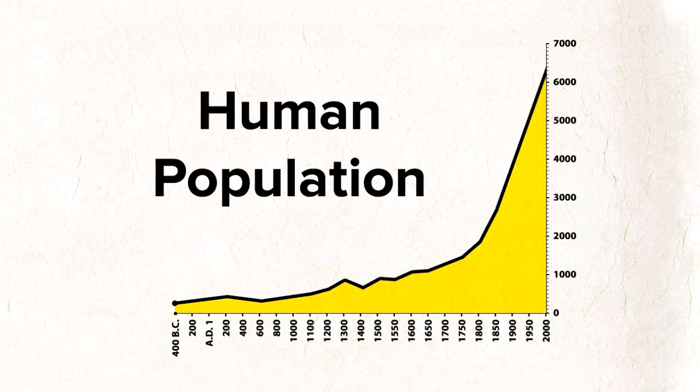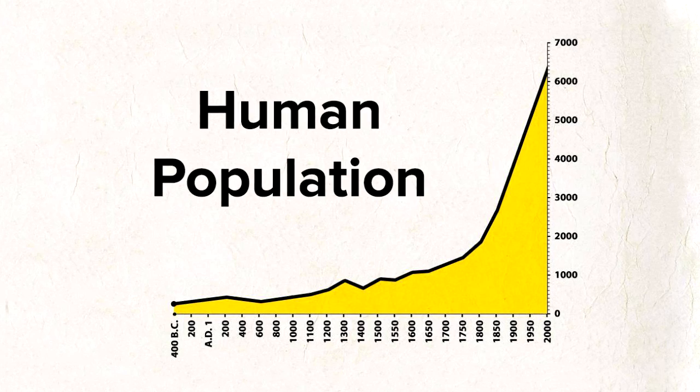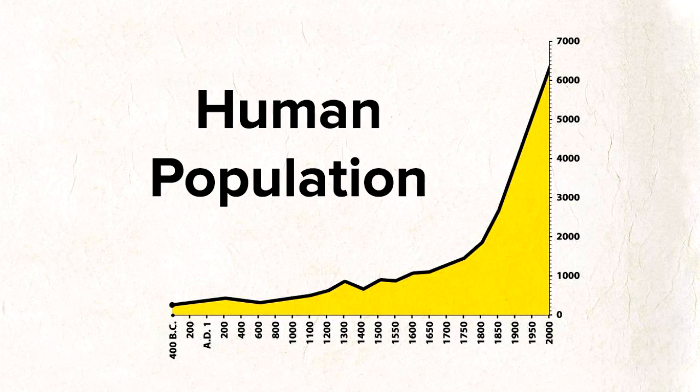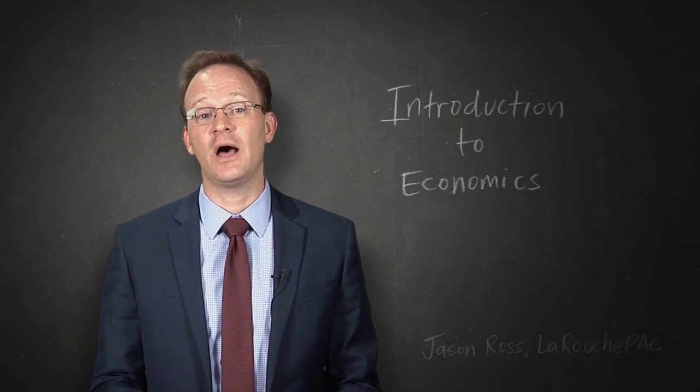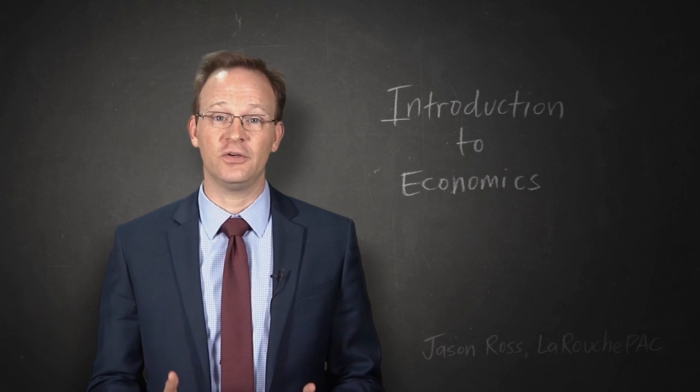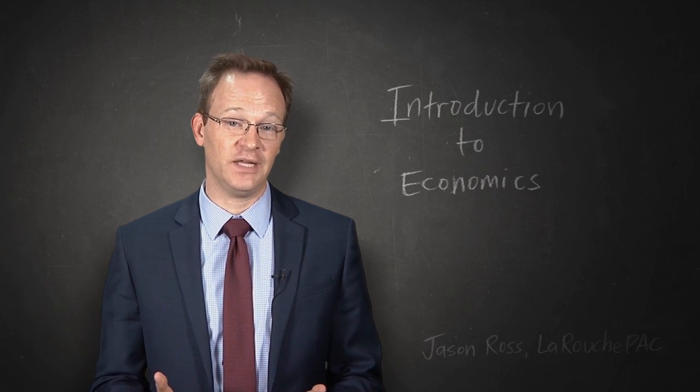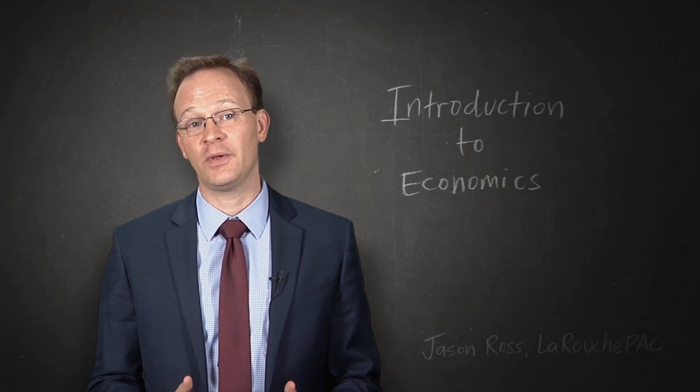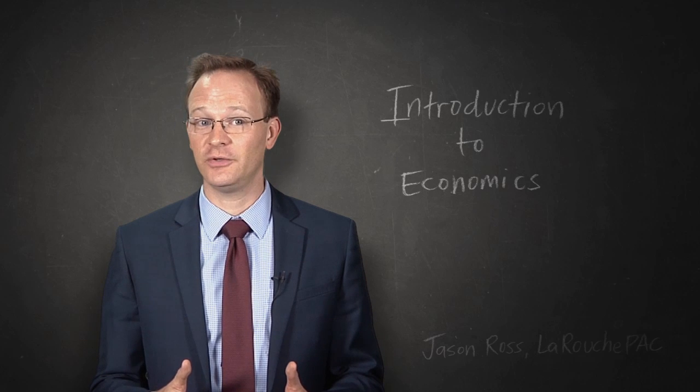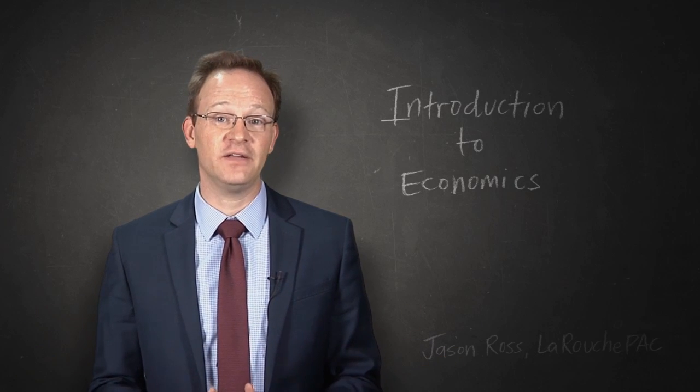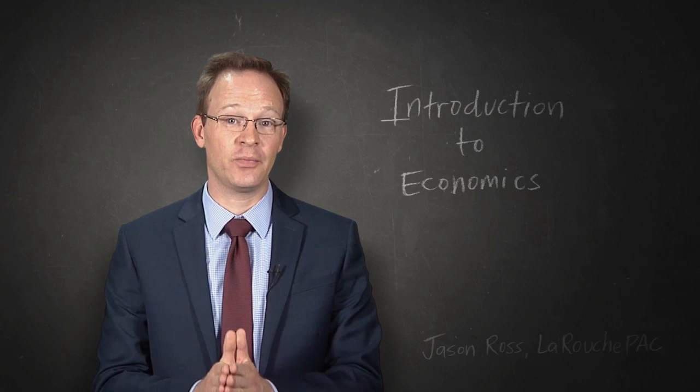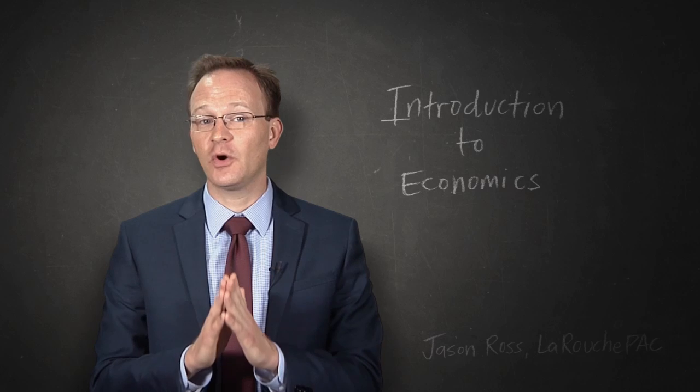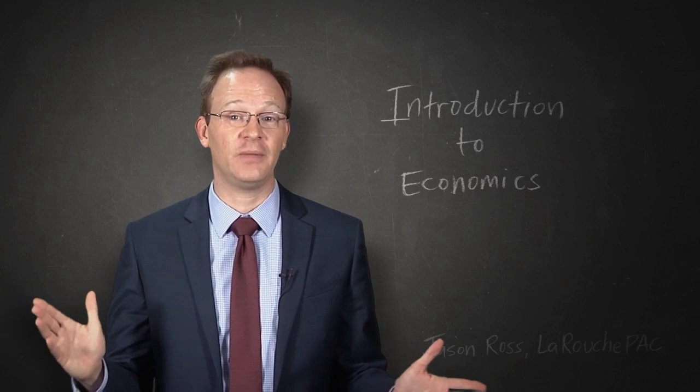Here we see human population, and there is absolutely no other living organism that has seen such a transformation in its population. All other life has what biologists call a carrying capacity, a fixed value of the number of that type of life that can live in a given area. Other forms of life consume resources around them. They don't produce them like we do. Unlike any other form of life, we can change the number of human beings that can live on this earth, and how we live. So how do we do this? And what does this tell us about economics?